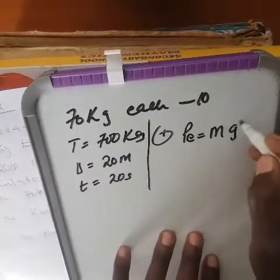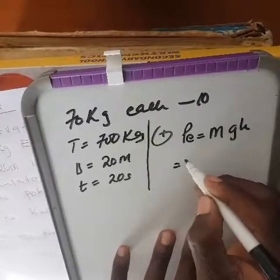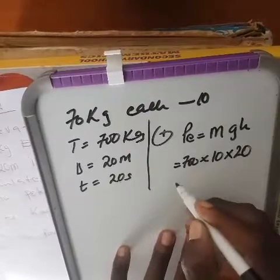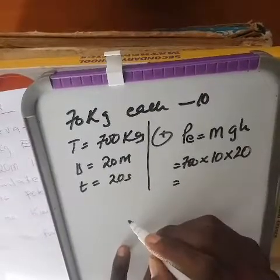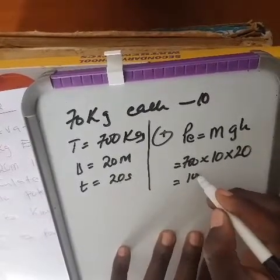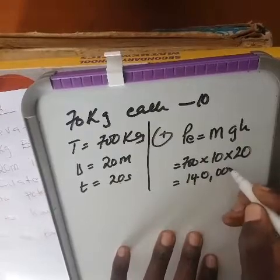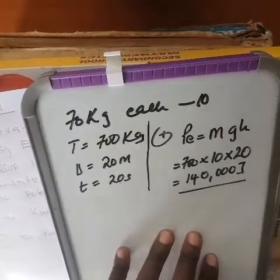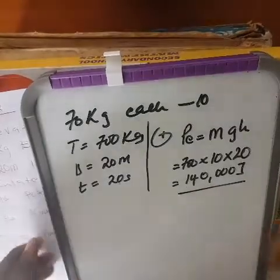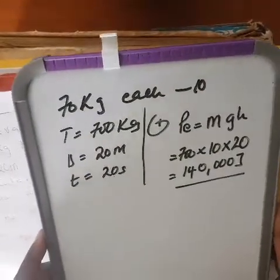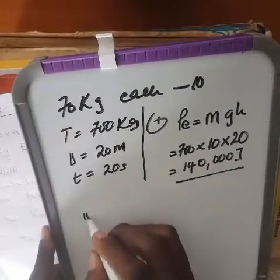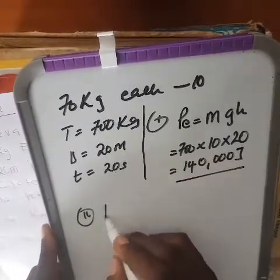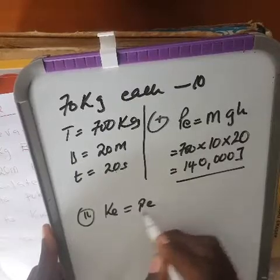To find potential energy: PE = mgh = 700 × 10 × 20 = 140,000 joules. For kinetic energy, we have not been given velocity, so kinetic energy will equal potential energy.